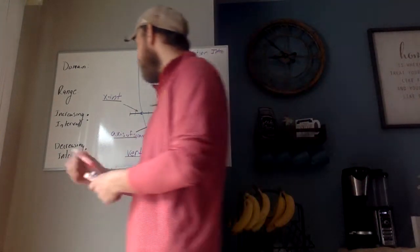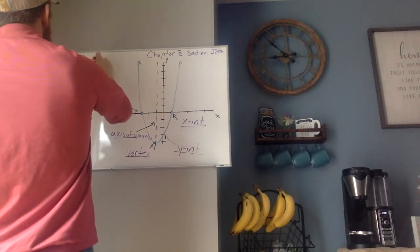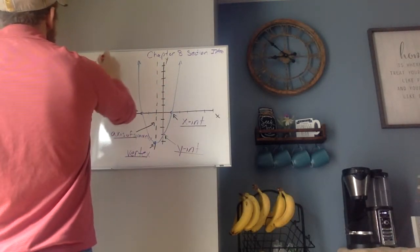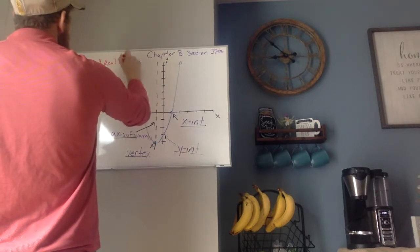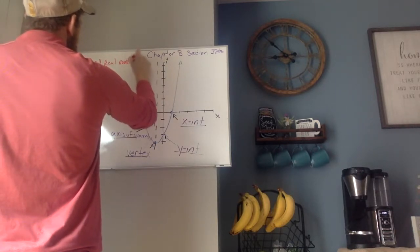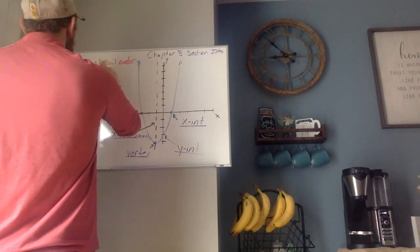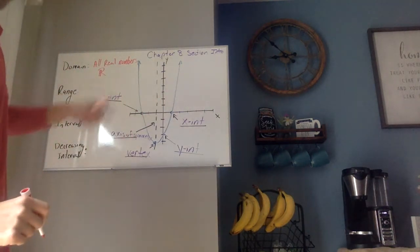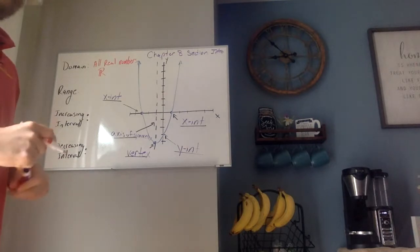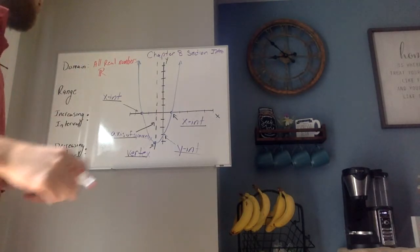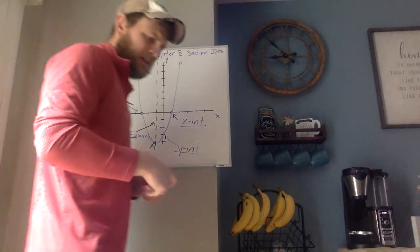So my domain is all real numbers. I use a fancy R — it's like an R with two legs — and that stands for all reals.